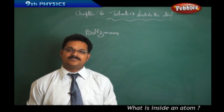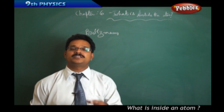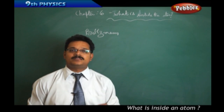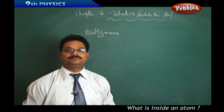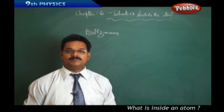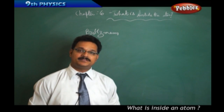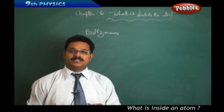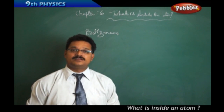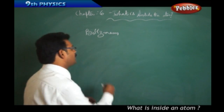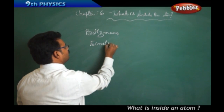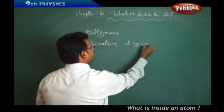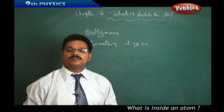But a few years later, a young scientist who was also a great physicist published a research paper stating that the atom can be divisible and that something exists inside the atom. This sparked new research, with scientists trying to find out whether the atom is divisible or indivisible. That physicist was none other than Einstein, who published his research paper at the age of 26.